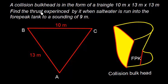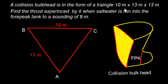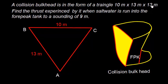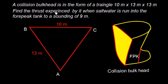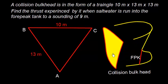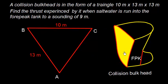A collision bulkhead is in the form of a triangle 10m x 13m x 13m. Find the thrust experienced by it when saltwater is run into the forepeak tank to a sounding of 9m. This is the forward part of the ship. The forepeak tank will be somewhere like this and this is going to be the collision bulkhead.